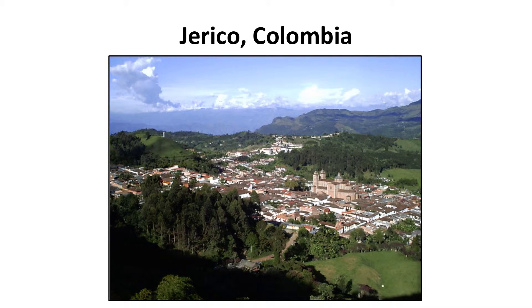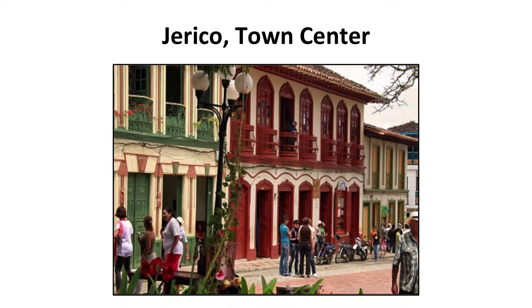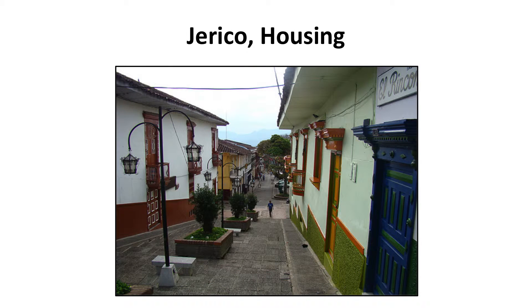To give you a visual image of the study location, let me show you a few pictures of the town. This is a picture of Jericho looking down into the valley from the side of a nearby mountain — a lovely place to do research. Here's a picture of the town's center, and this picture shows some of the housing along a street in Jericho. These houses are typical of those owned by the researchers' sample households.